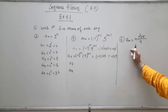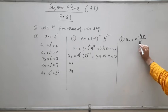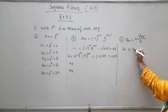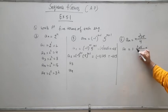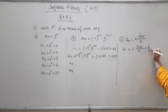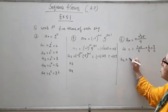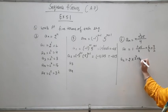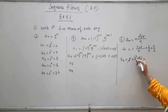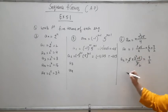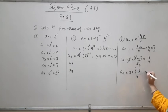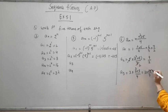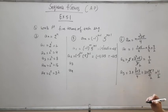Question 6: An = N(N² + 5)/4. A1 = 1×(1+5)/4 = 6/4 = 3/2. A2 = 2×(4+5)/4 = 2×9/4 = 9/2. A3 = 3×(9+5)/4 = 3×14/4 = 42/4 = 21/2.